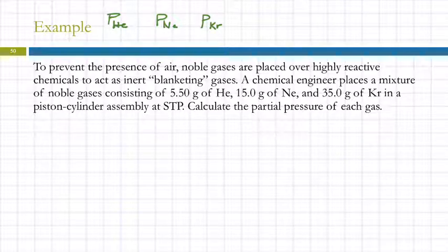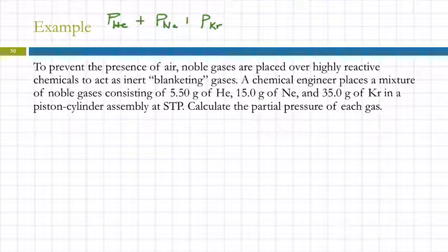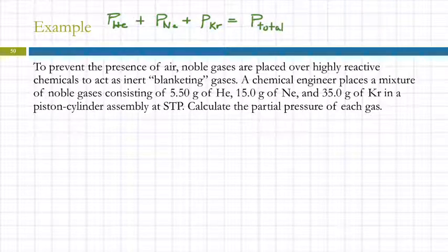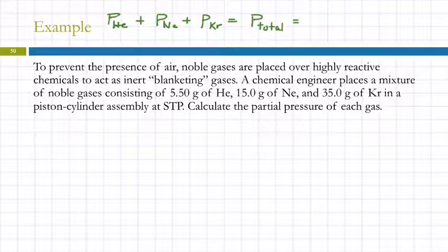Dalton's Law says the sum of the partial pressures equals the total pressure of the gas. Do we know the pressure of this gas sample? STP stands for standard temperature and pressure, so the pressure is hidden in those three letters — the total pressure is 1 atmosphere. The partial pressure of helium equals the mole fraction of helium times the total pressure P-total.